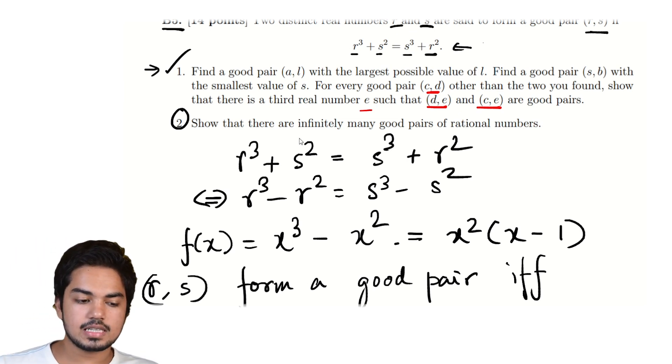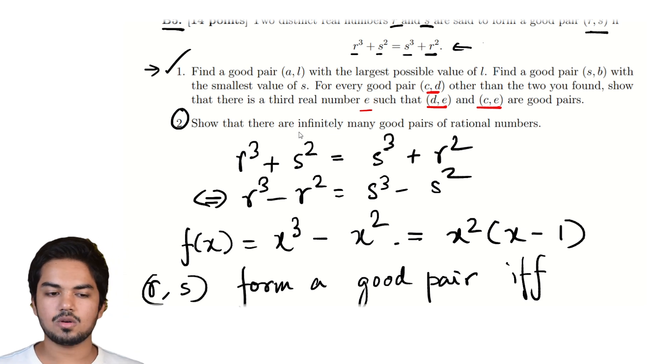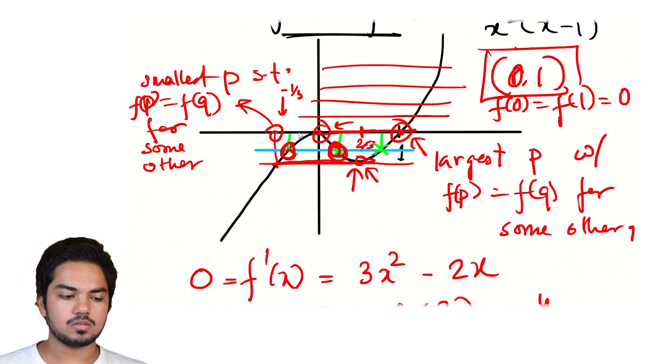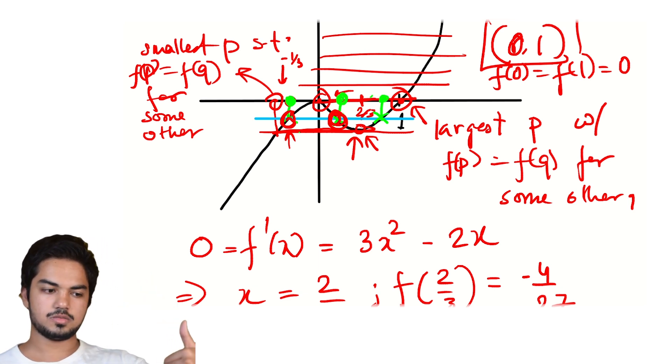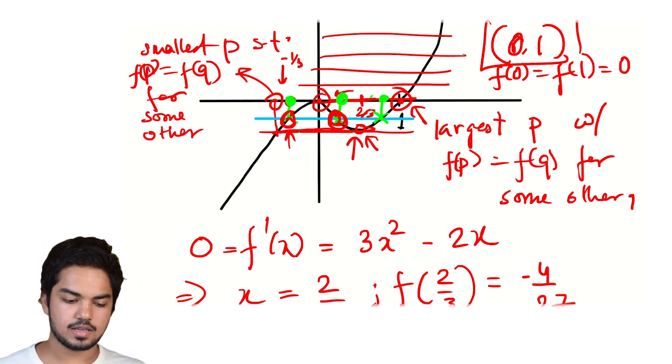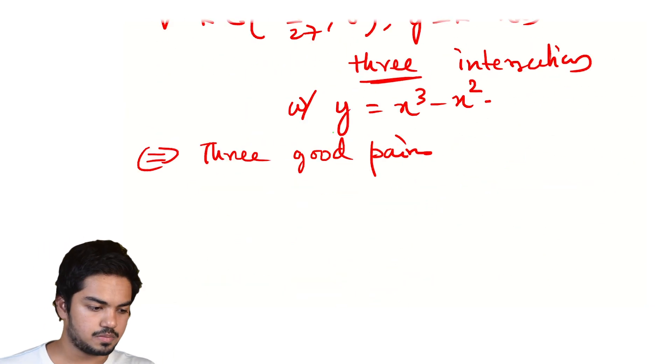And now the second part is to show that there are infinitely many good pairs of rational numbers. This actually follows very quickly because really all we want is for these numbers, these X values, to be rational. That's just fine. Choose a rational number in between, say, -1/3 and 0.